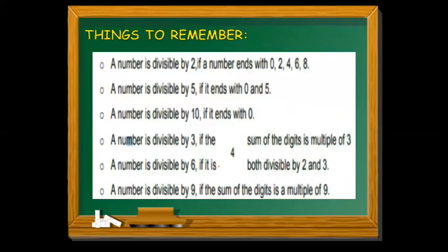Things to remember: a number is divisible by 2 if it ends with 0, 2, 4, 6, or 8. A number is divisible by 5 if it ends with 0 or 5. A number is divisible by 10 if it ends with 0. A number is divisible by 3 if the sum of the digits is a multiple of 3. A number is divisible by 6 if it is divisible by both 2 and 3. And a number is divisible by 9 if the sum of the digits is a multiple of 9.